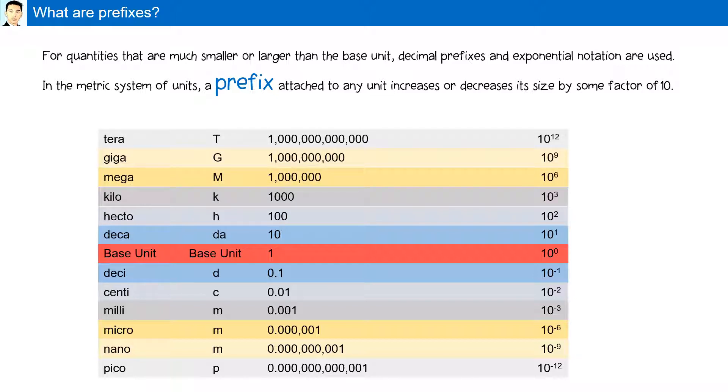And larger, we have mega, giga, and tera. These are the prefixes, symbols, multiplier, and exponent form.